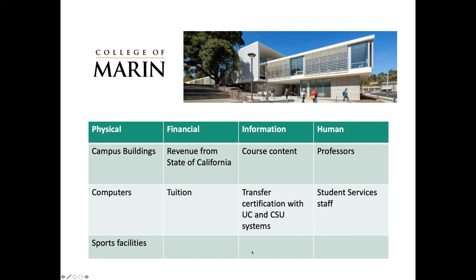Now consider an organization like College of Marin, where we're actually serving you this information. College of Marin has physical resources like campus buildings at both the Kentfield and Indian Valley campuses, computers and computer infrastructure — which is how you access Canvas and watch these videos — as well as sports fields, sports facilities, and a library. Lots of physical resources, even though a college is very different from a for-profit corporation like Chevron.